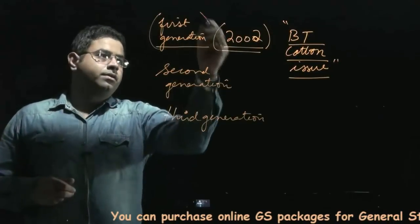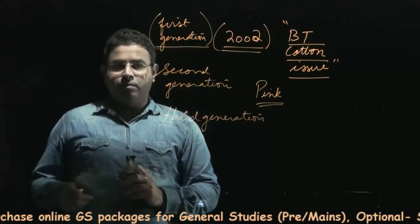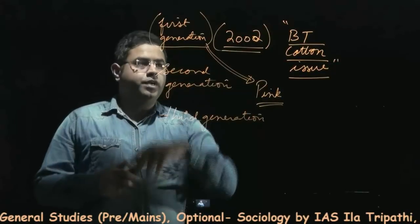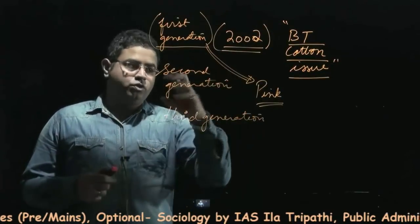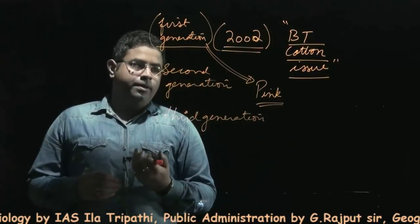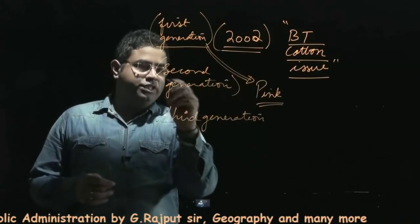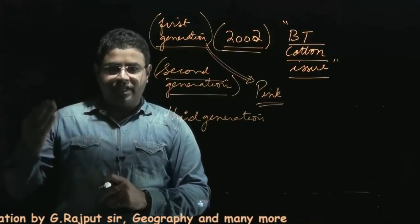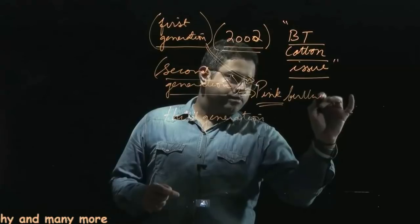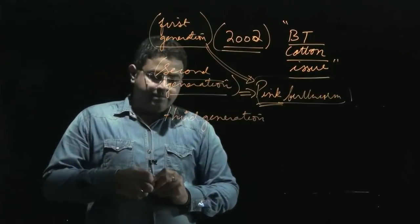Now the biggest culprit affecting cotton yield is the pink bollworm. It was the pink bollworm primarily which we wanted to fight by using the first generation of BT cotton introduced in 2002. However, the pink bollworm has developed a resistance against the first generation of BT cotton, which led to the need to introduce the second generation. But again, the pink bollworm is developing resistance against this second generation of BT cotton hybrid seeds as well.